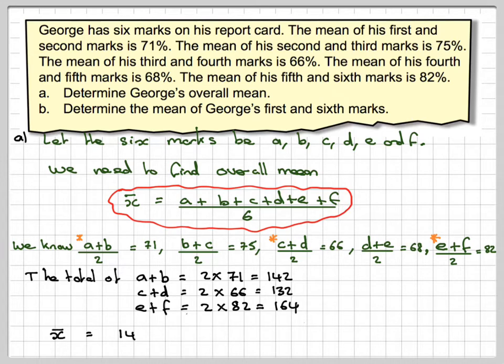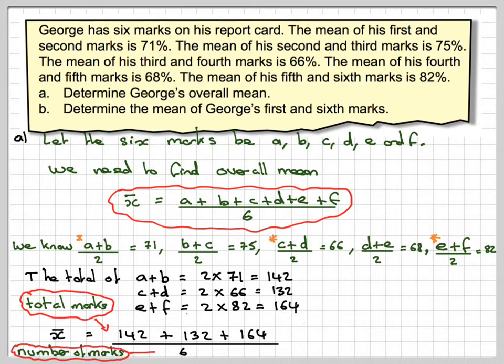Now we have the total number of marks, so we can say the mean is going to be (142 + 132 + 164)/6, which gives us 438/6, which is 73.